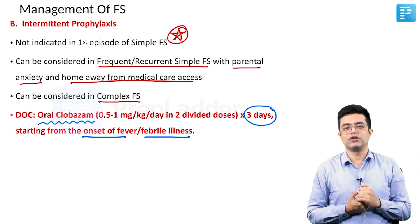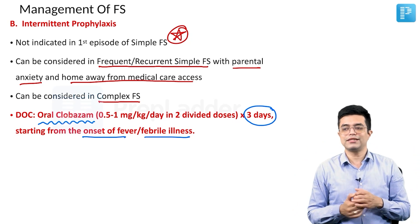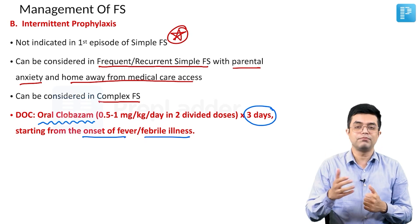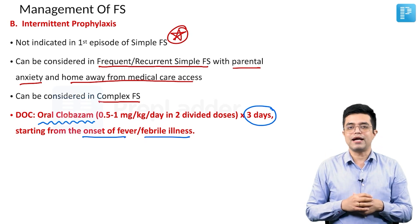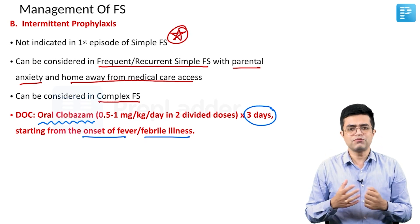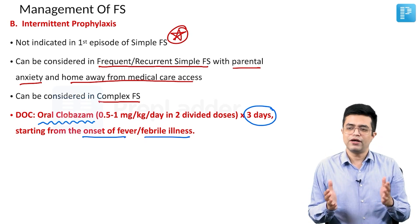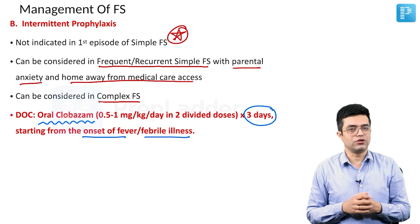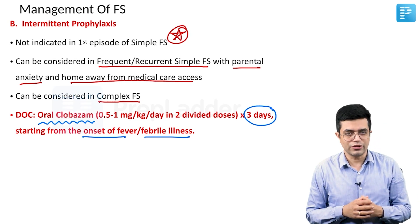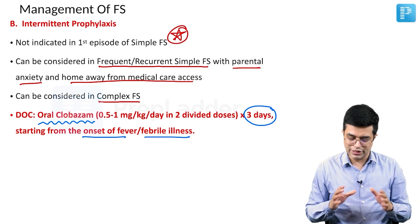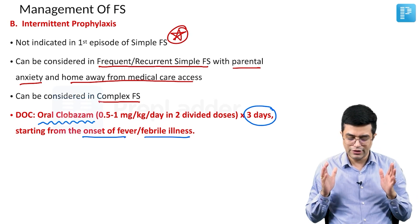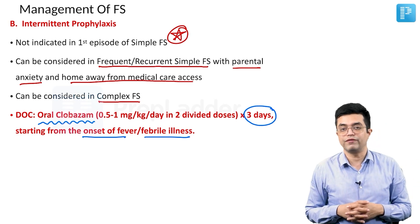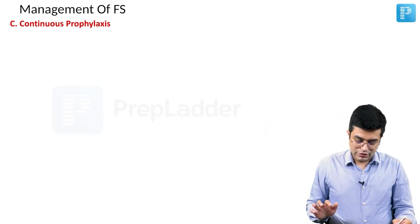Intermittent prophylaxis is equally potent as continuous prophylaxis, has fewer side effects, better compliance, and has been shown to have almost equal long-term neurological outcomes. That is why it is usually preferred over continuous prophylaxis.